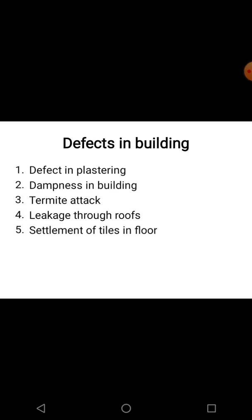In plastering, the plastered part is removed. In dampness, due to water absorption, you will find dampness in the building. In termite attack, insects enter your building and attack the structure. Leakage through roof occurs when rainwater leaks through the roof. And fifth is settlement in the floor tiles.